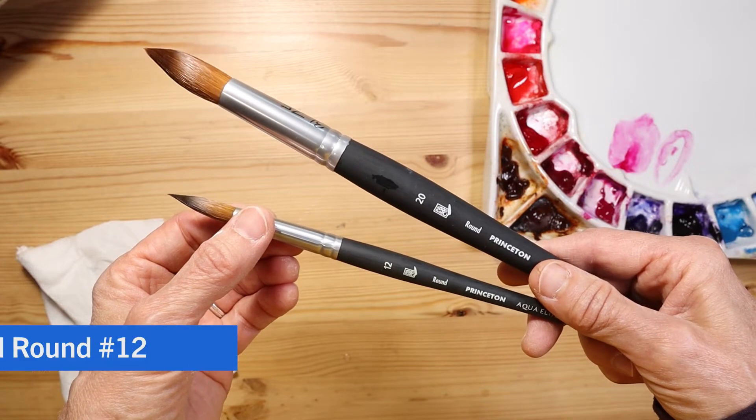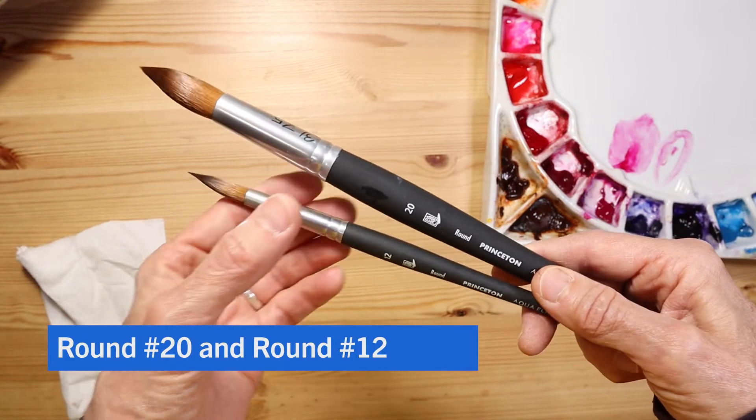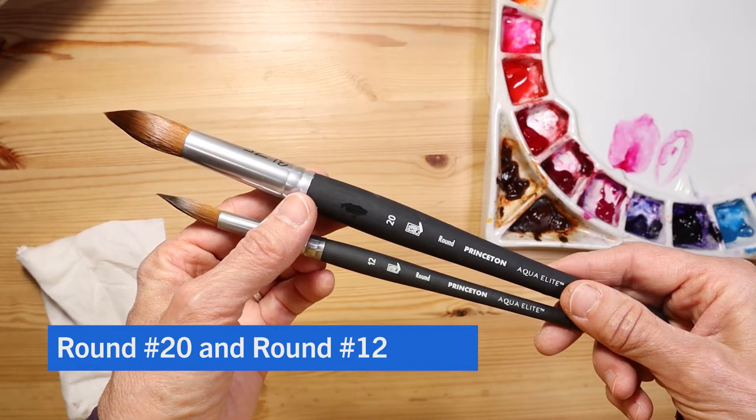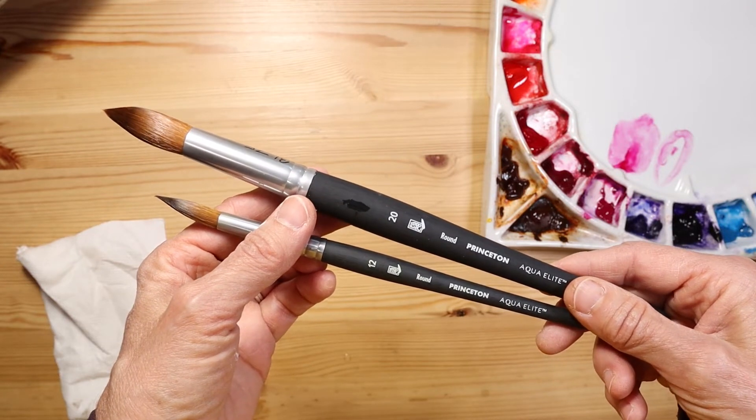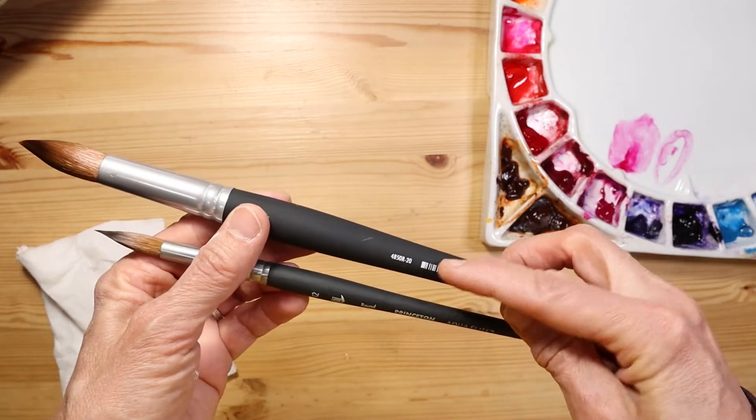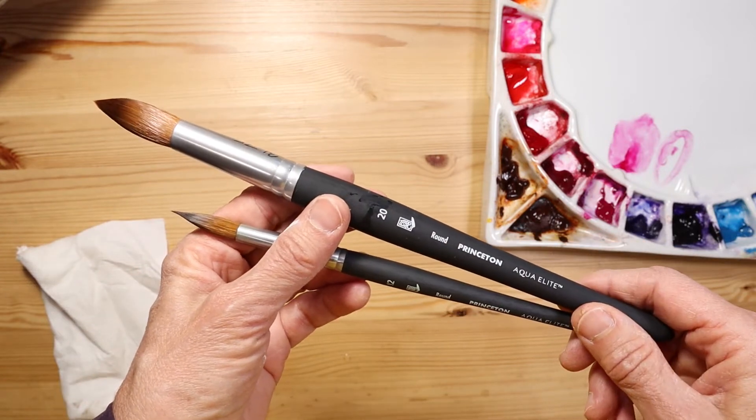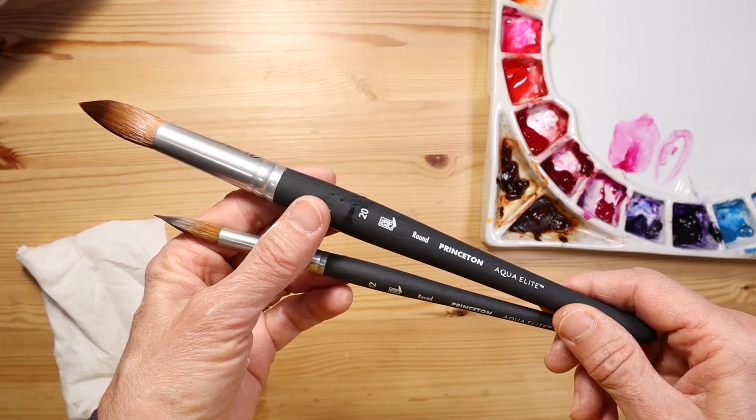In this video I'm going to highlight two brushes that I have in my studio, both Princeton Aqua Elite, number 20 as I mentioned, and this number 12. Let's talk about the Princeton Aqua Elite series for a second. It's numbered the 4850 series, and it is considered the top of the line Princeton watercolor brush.